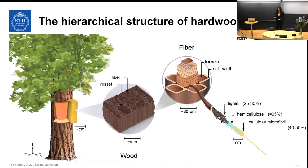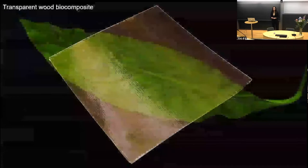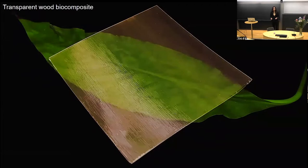The naturally occurring porosity of wood can be utilized for functionalization. For example, a functional polymer can fill the lumen in order to provide wood with electrical conductivity, or the cell wall can be chemically modified to increase nanoporosity so that nanoparticles can be infiltrated to provide a new functionality. Various wood nanotechnologies can be produced, and transparent wood is one of them, combining optical transparency with mechanical performance.